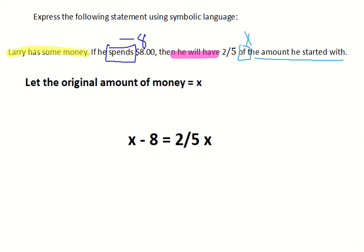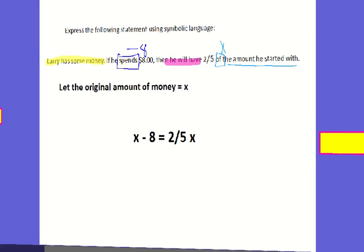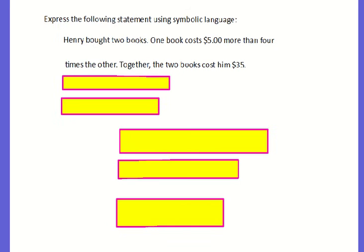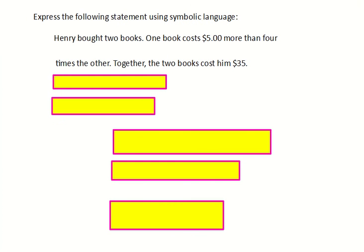Let's look at another example. Express the following statement using symbolic language. Henry bought two books. One book cost five dollars more than four times the other. Together the two books cost him thirty-five dollars.